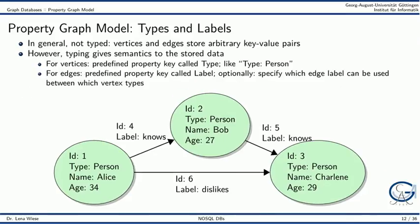Optionally, we can introduce types and labels in the property graph model. Without typing, vertices and edges can store arbitrary key-value pairs. By typing, I can introduce a schema for nodes and edges, and by doing so I can also define different semantics for different types of nodes and edges.